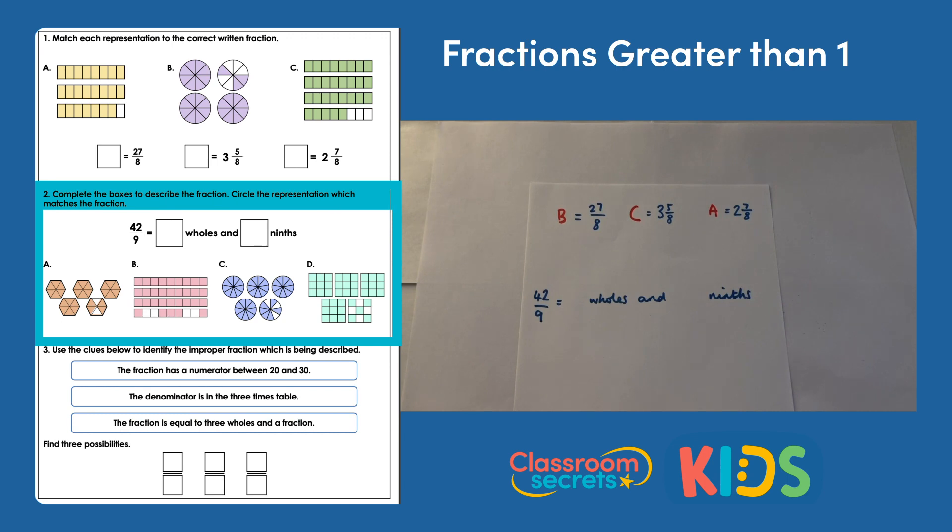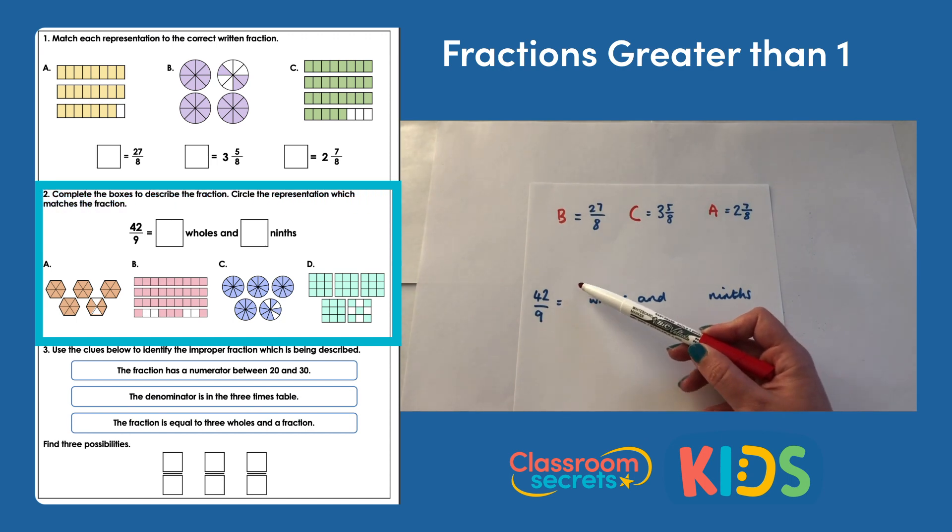Question two: complete the boxes to describe the fraction. Circle the representation which matches the fraction. So we have our fraction here, 42 ninths, and we need to complete how many wholes make that up and how many ninths make that up. Then we have our four images at the bottom which we then need to choose from.